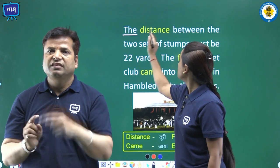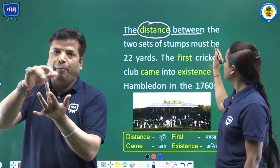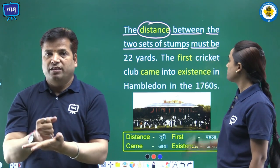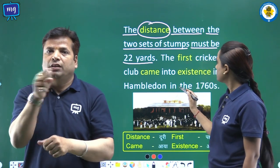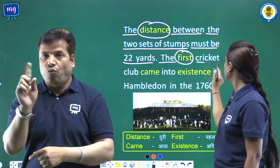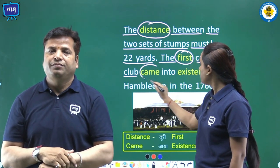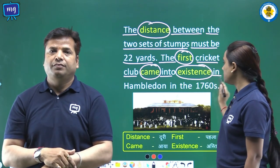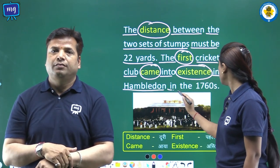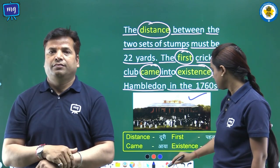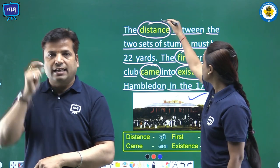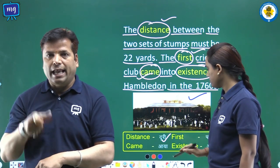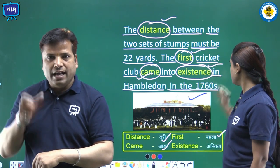The distance between the two sets of stumps must be 22 yards. The first cricket club came into existence in Hambledon in the 1760s. Word meanings: distance — doori; first — pehla; existence — astitva.